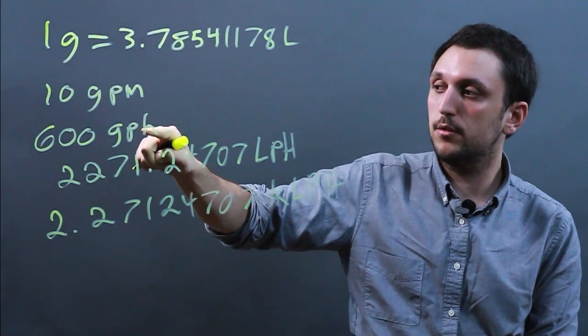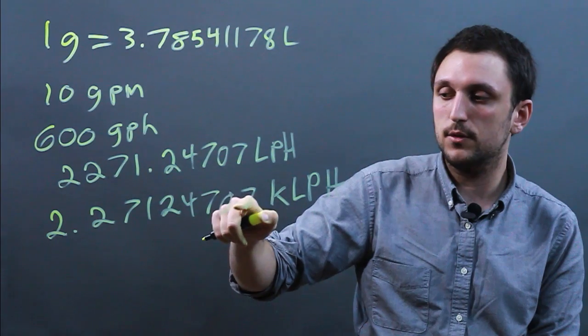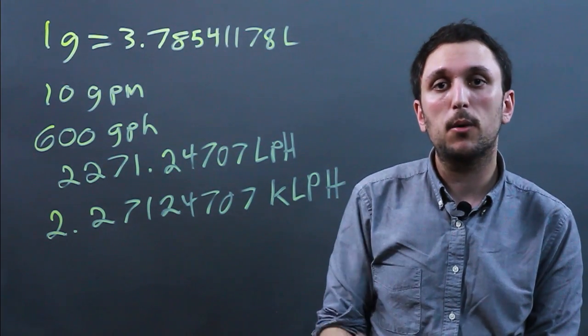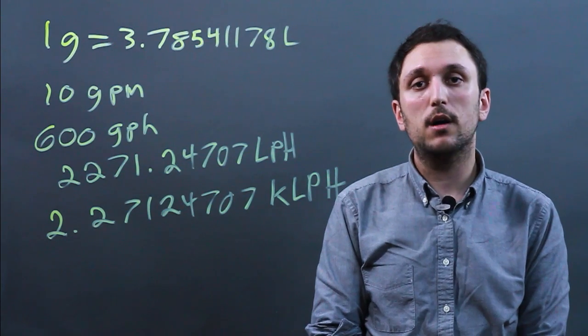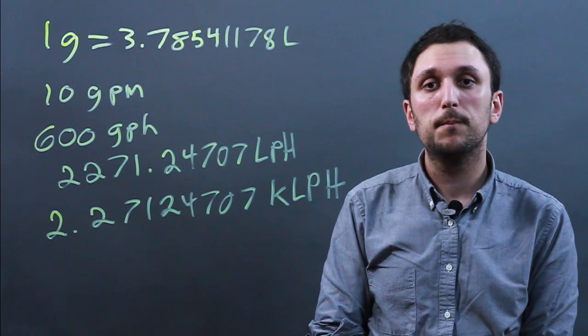So 600 gallons per hour or 10 gallons per minute is 2.27124707 kiloliters per hour. So I'm Charlie Kasov and you just learned how to convert gallons per minute to kiloliters per hour. Thanks a lot.